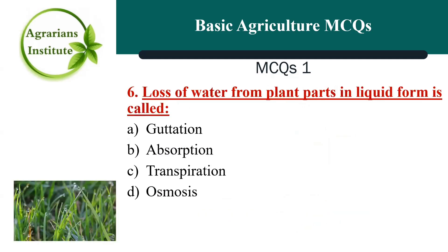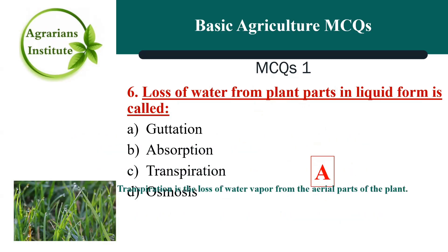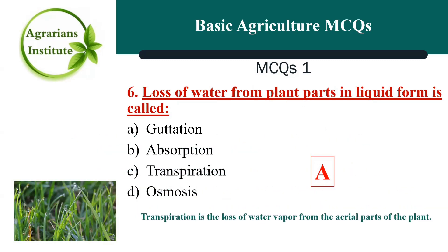Next MCQ: Loss of water from plant parts in liquid form is called — the correct answer is A, Guttation. Transpiration, by contrast, is the loss of water vapor from the aerial parts of the plant.